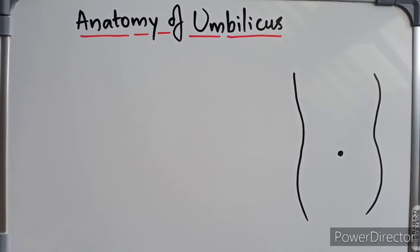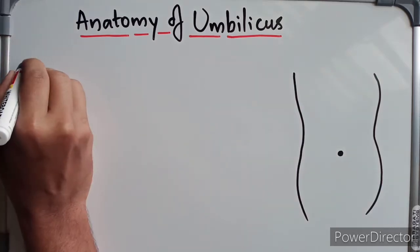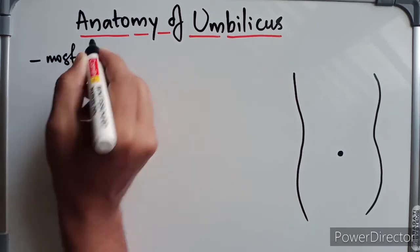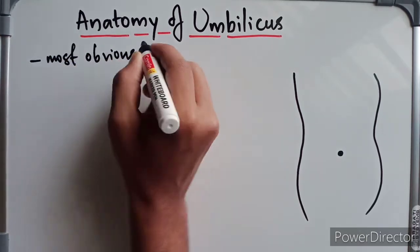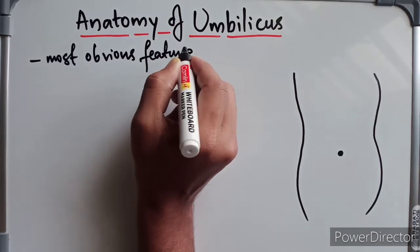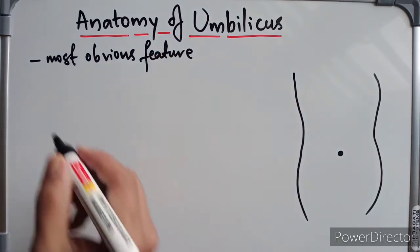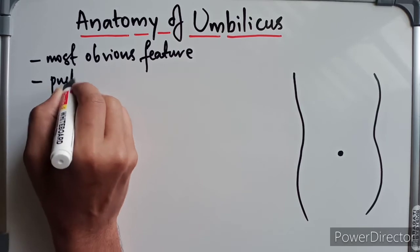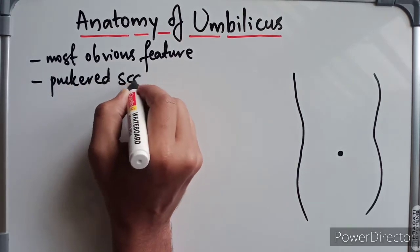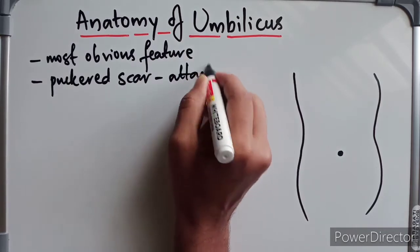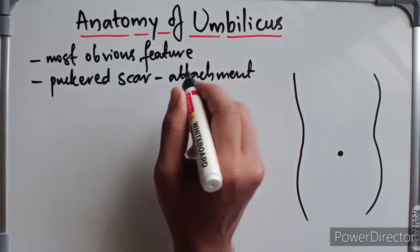Welcome to Med 10. In this video we are going to look at the anatomy of the umbilicus. The umbilicus is just a puckered scar but it is of very high cosmetic value. The umbilicus is the most obvious feature of the abdomen — it is a normal puckered scar in the anterior abdominal wall representing the site of attachment of the umbilical cord in the womb.